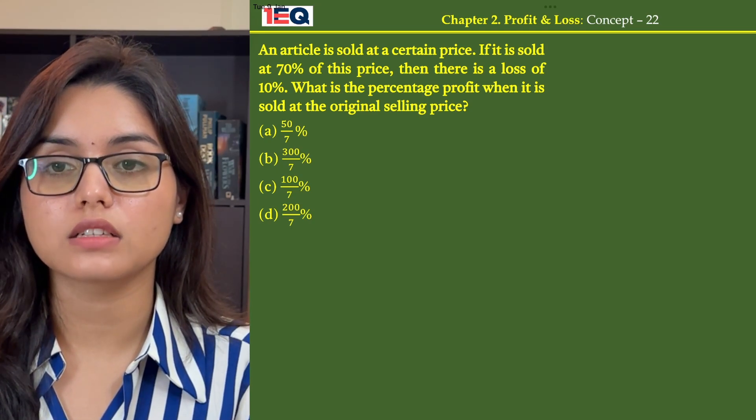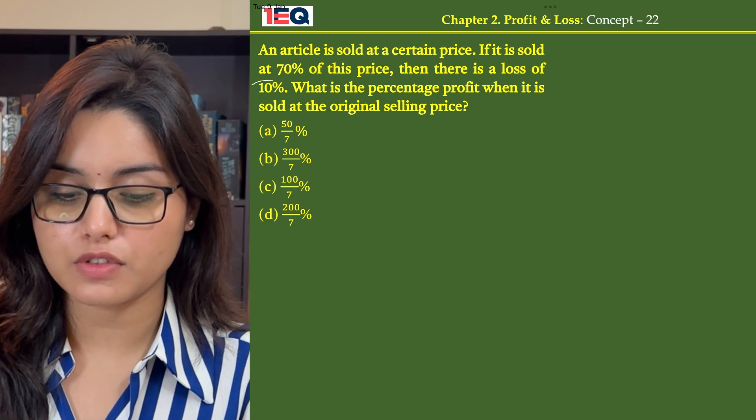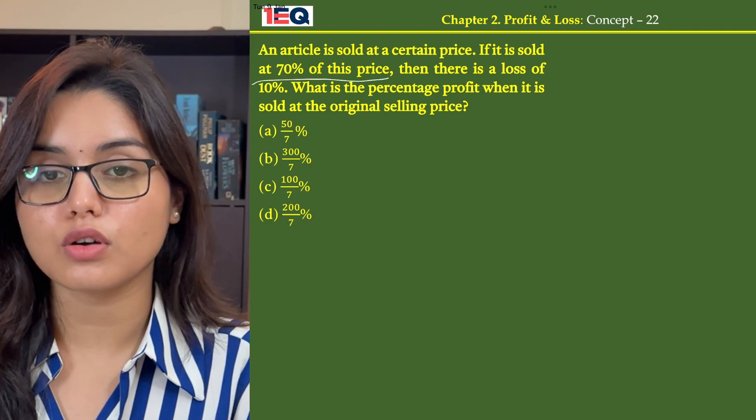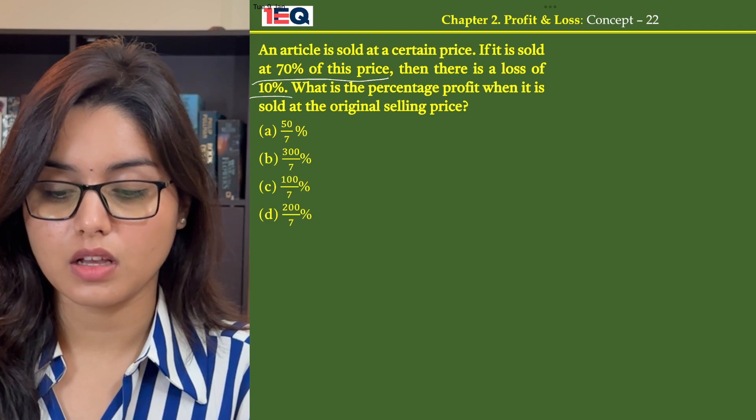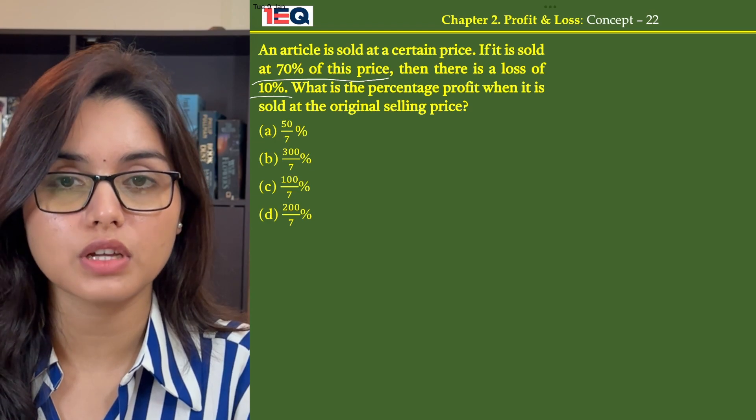An article is sold at a certain price. If it is sold at 70% of this price, then there is a loss of 10%. What is the percentage profit when it is sold at the original selling price?